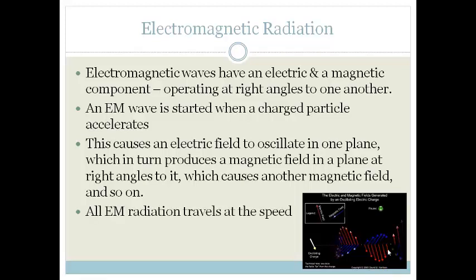All electromagnetic radiation travels the speed of light, which is 3 times 10 to the 8 meters per second.